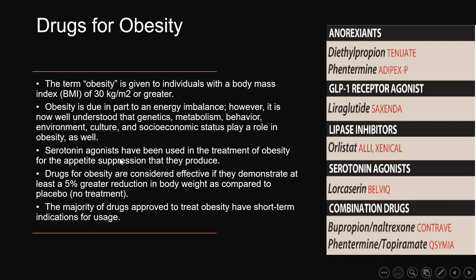The most commonly used class for obesity management is serotonin agonists, and this may be the only class that can be used for chronic weight management. It works through appetite suppression. In general, with serotonin agonists or other obesity drugs, patients should lose around five percent of their body weight; otherwise, it is highly recommended to stop using these drugs because there are no achievable benefits.